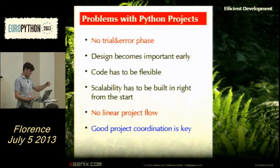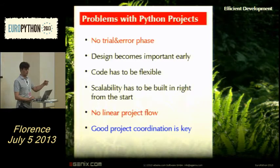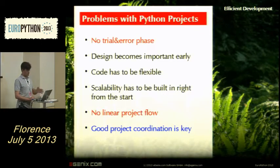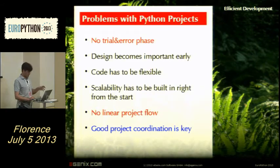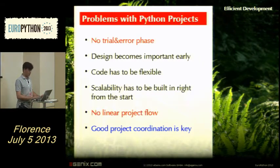Something else that's problematic is that you no longer have a linear project flow. There's no longer the possibility to develop the project in steps — you often have loops. Like in agile development, you write something, go back to the customer, show it to them, discuss it, get change requests, and put those back into the product. In traditional IT development those phases exist as well, but they are not as tightly bound. To overcome these challenges, you need good project coordination.